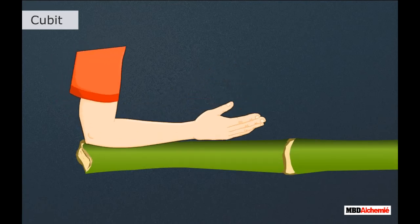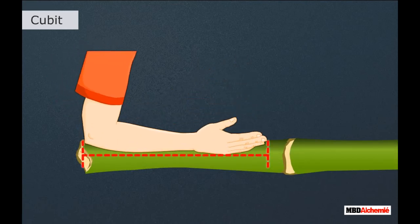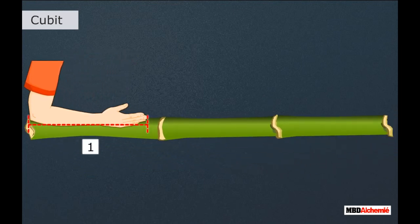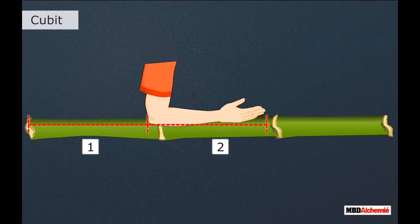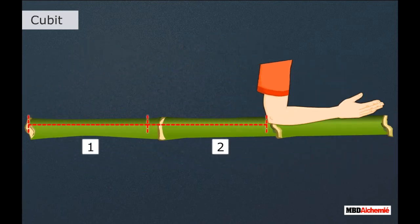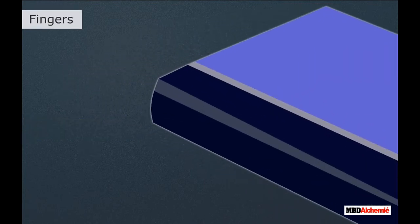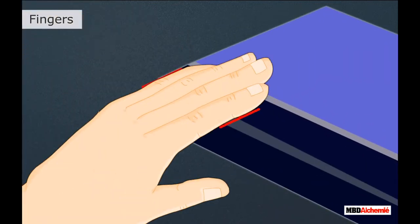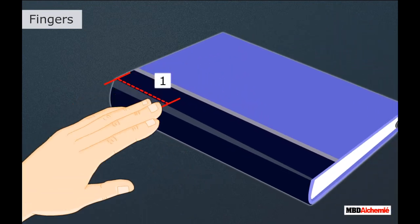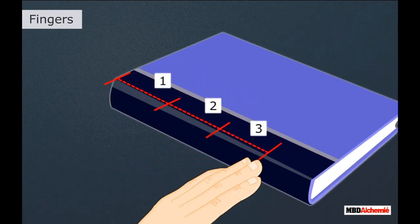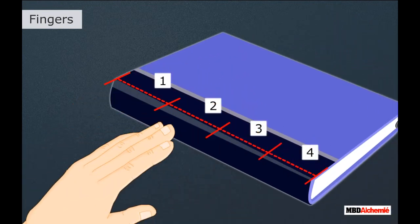Cubit is the distance between the tip of the finger to the elbow. For example, the length of this bamboo stick is about three cubits. Fingers is the unit of distance equal to the width of four fingers closely pressed together. For example, the length of this book is about four fingers.